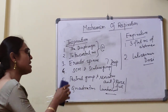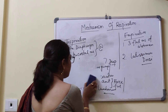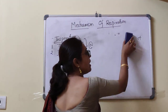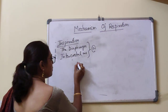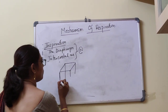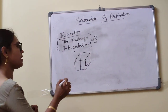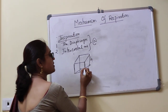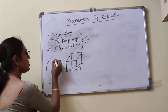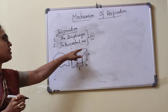Now let's see the mechanism. Thoracic cavity is often compared with a box. A box has three dimensions: height, length, and breadth. If any one dimension increases — say the height, the length, or the breadth — the volume of the box will increase. Similarly, if the height, transverse diameter, or anteroposterior diameter of the thoracic cavity increases, the volume of the thoracic cavity will increase.